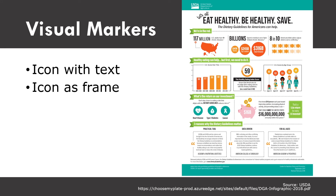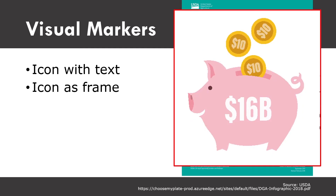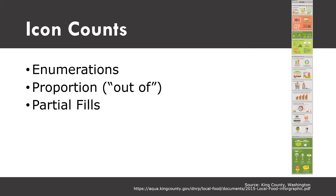That visual marker really helps cement information in people's minds. You can also use an icon as a frame for textual information. For a savings of 16 billion dollars, you use a frame of a piggy bank, which immediately evokes savings, and the 16 billion dollars on top of it — the text of that number — makes that information cement in your audience's mind even better.